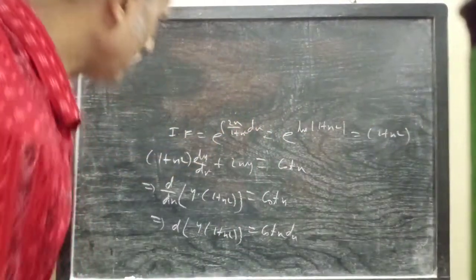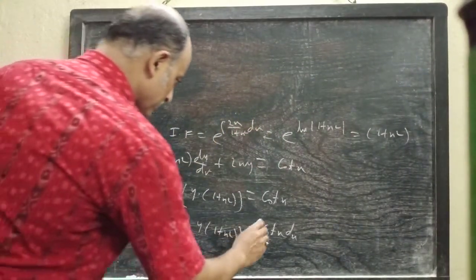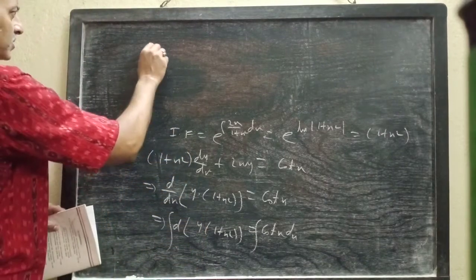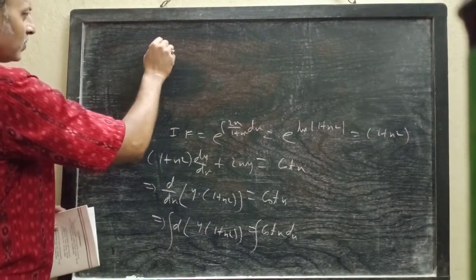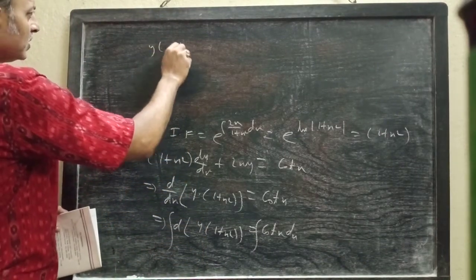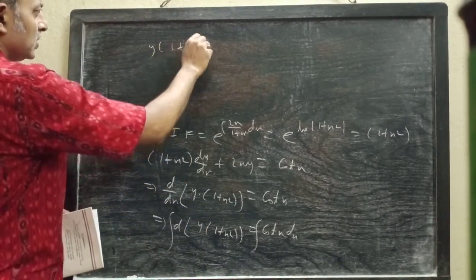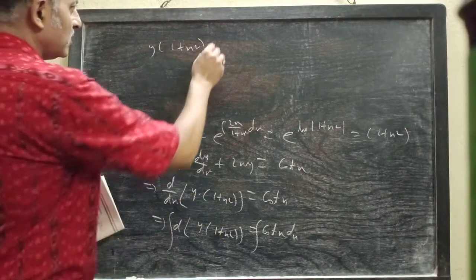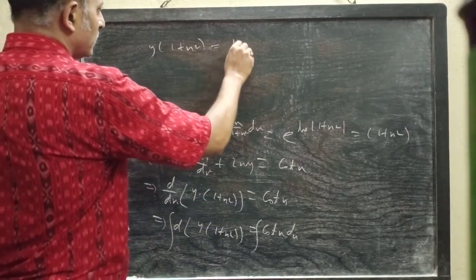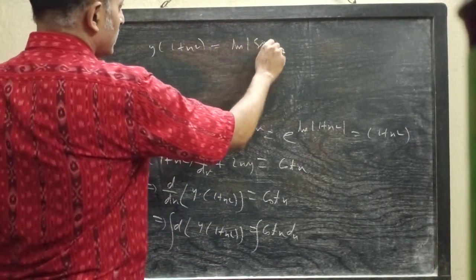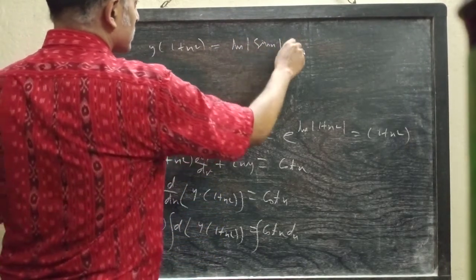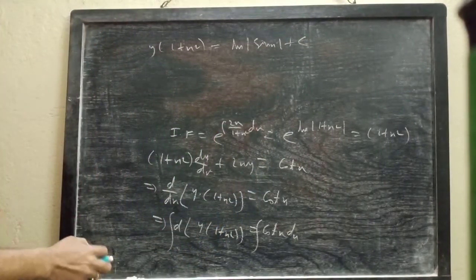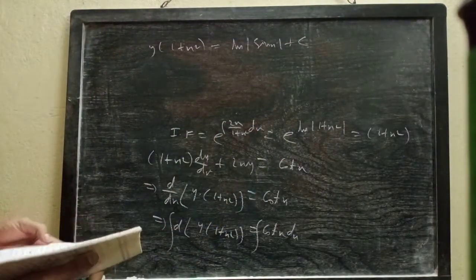Integrating both sides we get from the left side y × (1 + x²), and on the right side we get 2x². So the general solution is y(1 + x²) = 2x² + c.